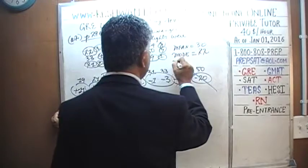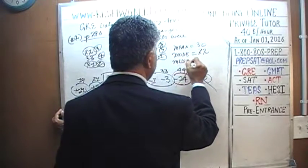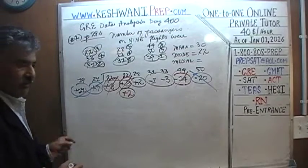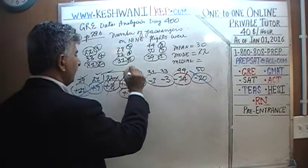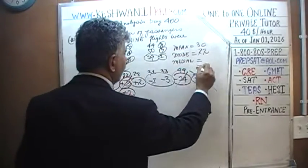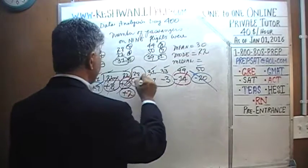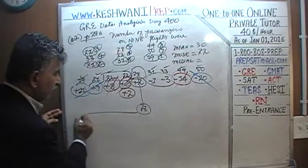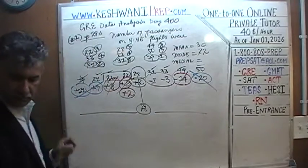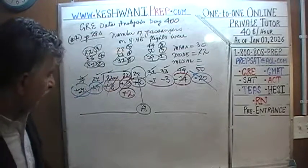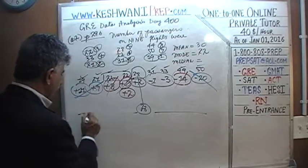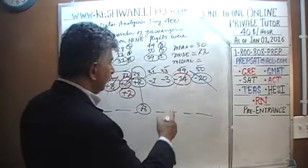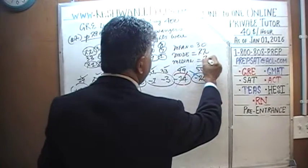For the median, since we have nine observations, we count four from each end and the middle value is our median. There are four observations below 28 and four above 28, so the median is 28.